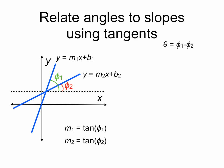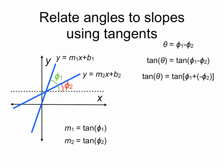If we take the tangent of both sides of our equation relating theta, phi1, and phi2, then we have the tangent of theta equals the tangent of phi1 minus phi2. We can rewrite that as the tangent of theta equals the tangent of phi1 plus negative phi2, and now we can use our tangent addition identity.